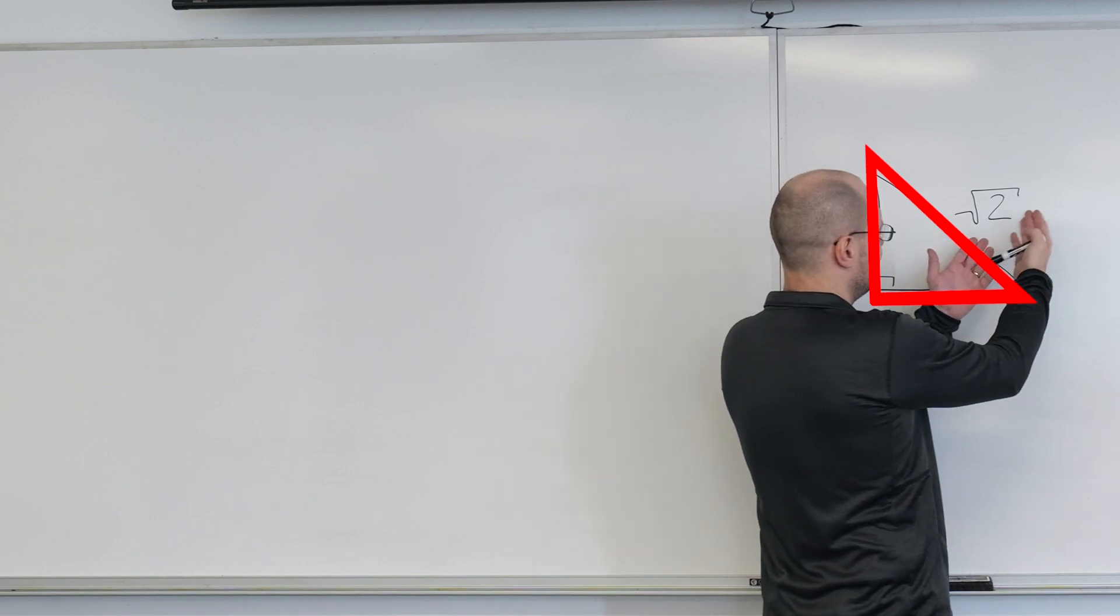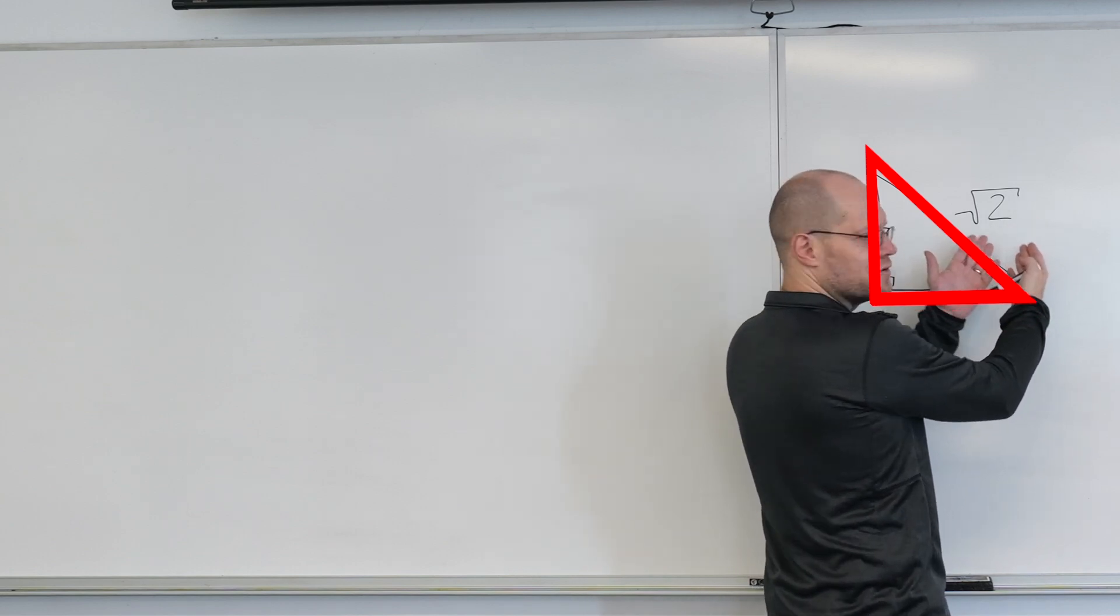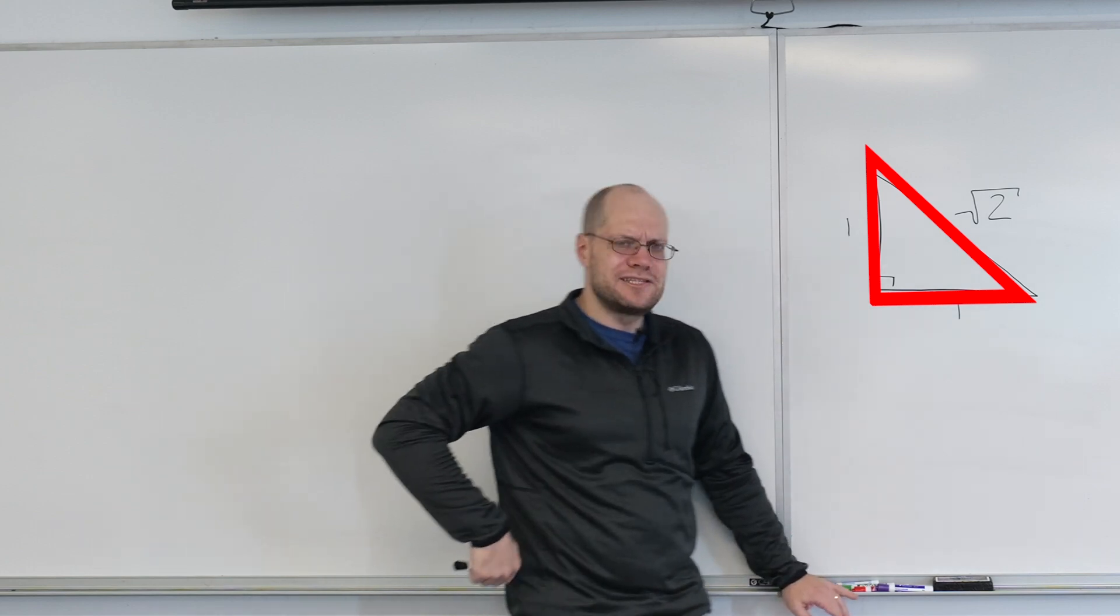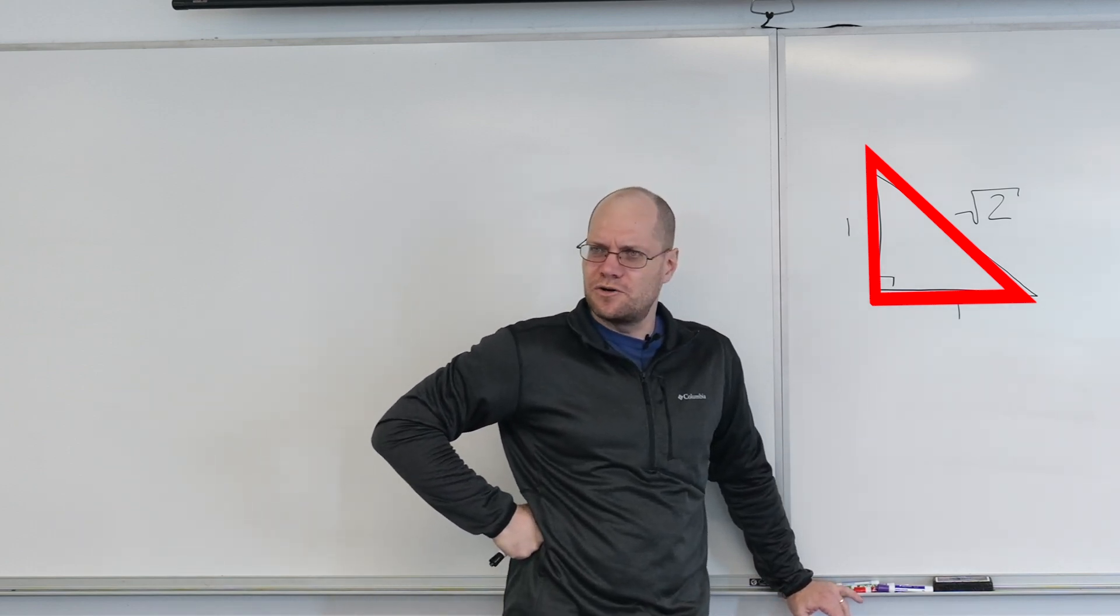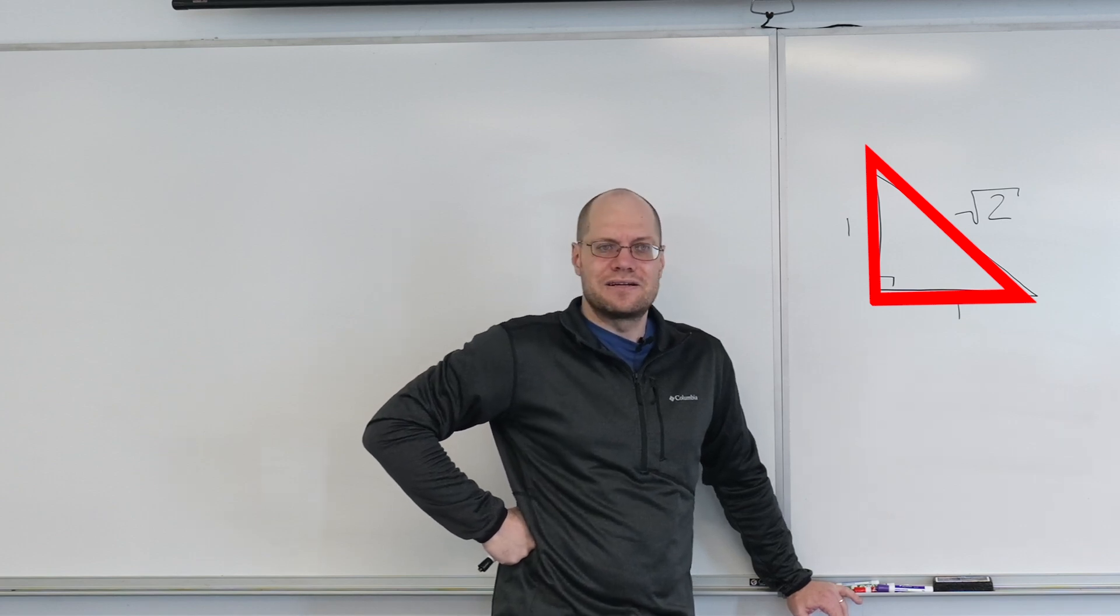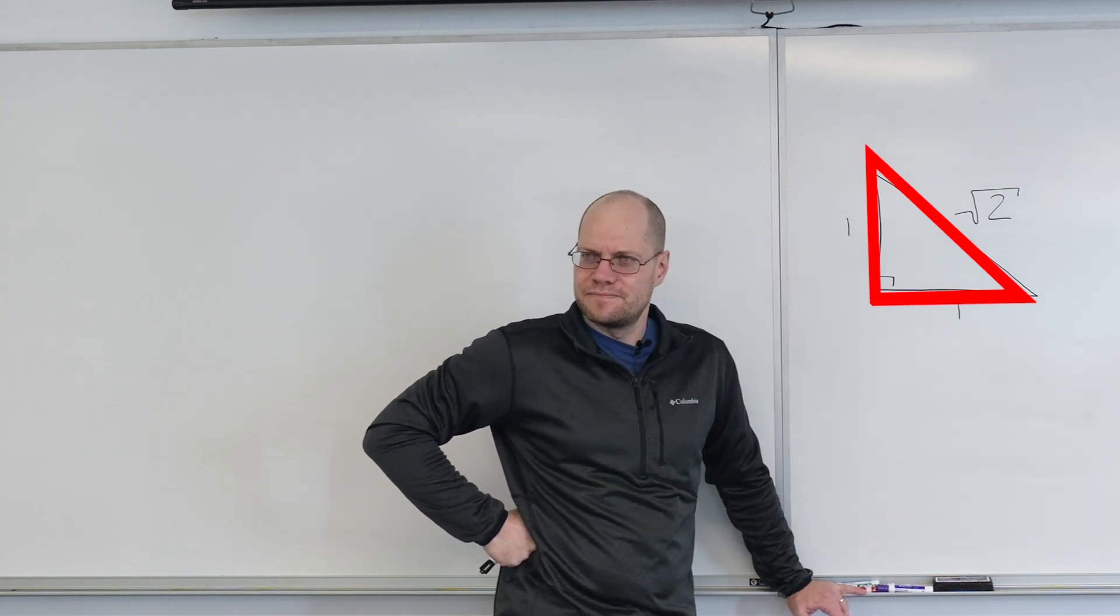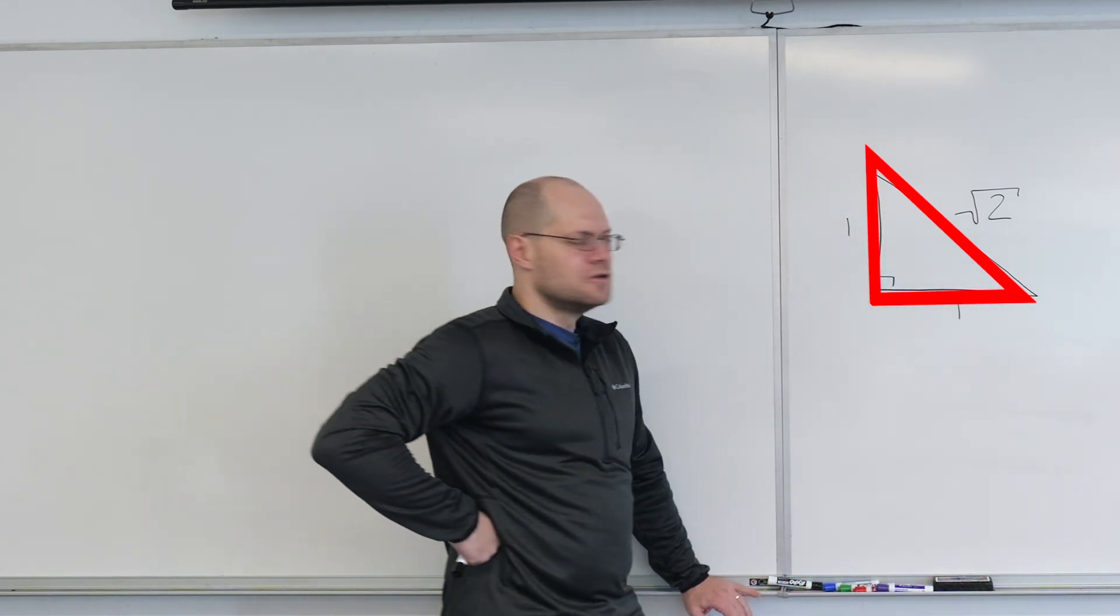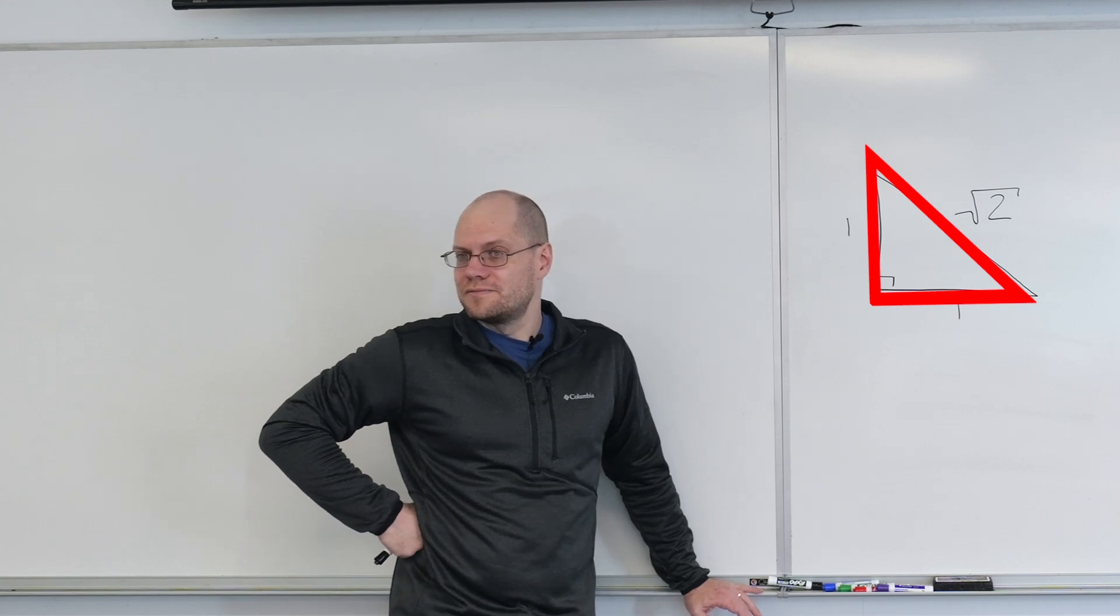Then they started looking for what fraction it is. Is it three over two? No, it's a little less. Is it 14 over 10, or 141 over 100? They couldn't find it, and then they realized there can't be a number like that. So right away they had a length that's not a number.